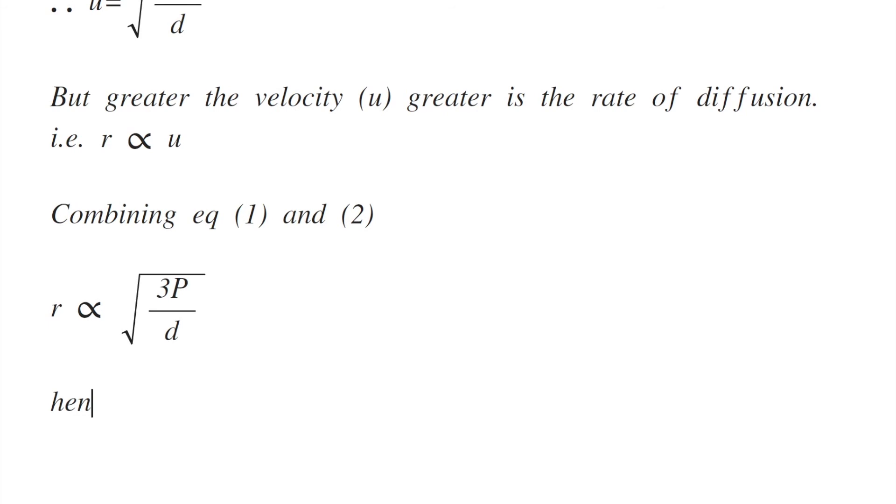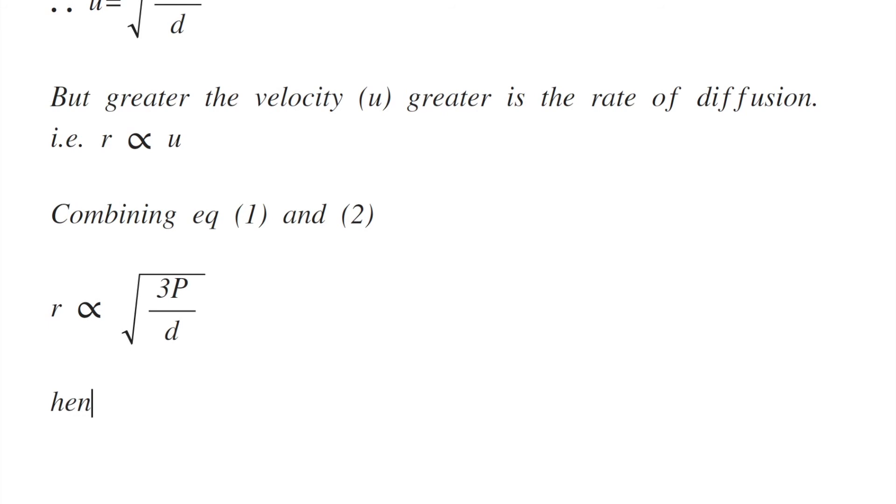And hence, if pressure is constant, then the first factor becomes constant and r is proportional to the square root of 1/d. This is Graham's law.